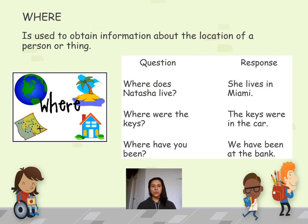Let's continue with 'where.' Where is used to obtain information about the location of a person or thing. Where significa 'donde' y lo utilizamos para obtener información sobre dónde se encuentra una persona o algo. Examples: Where does Natasha live? She lives in Miami. Where were the kids? The kids were in the car. Where have you been? We have been at the bank.